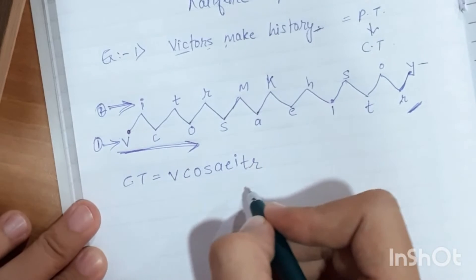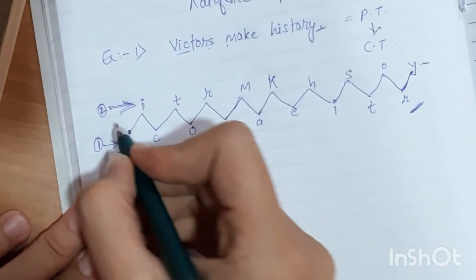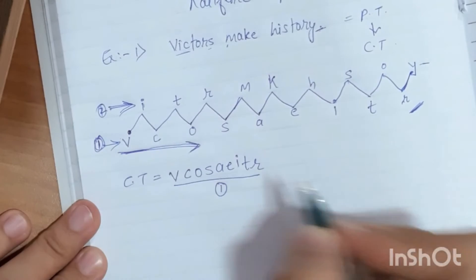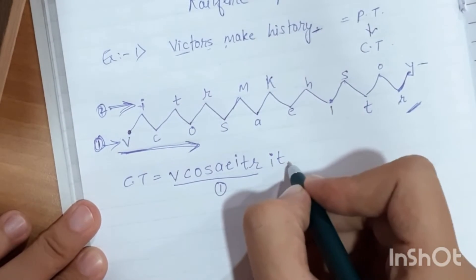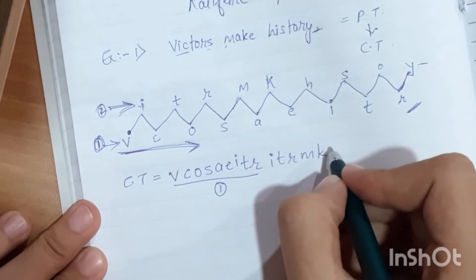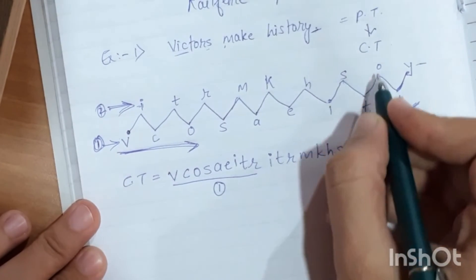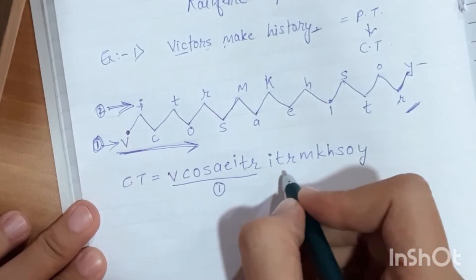Collect the entire row from the bottom. In the second row is I, T, R, M, K, H, S, O, and last is Y.